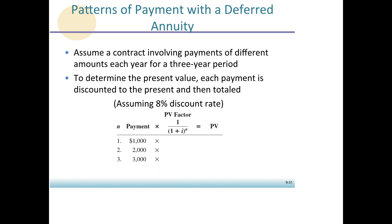Let's look at an example. Assume a contract involving payments of different amounts each year for a three-year period, and then we're also going to add an annuity at the end of that. The first thing we have to do is discount each one of these back to the present, because we're looking for the present value of this deferred annuity. The first part involves lump sum amounts — we have to treat each one as a single lump sum because they're not the same amount, therefore they're not an annuity.